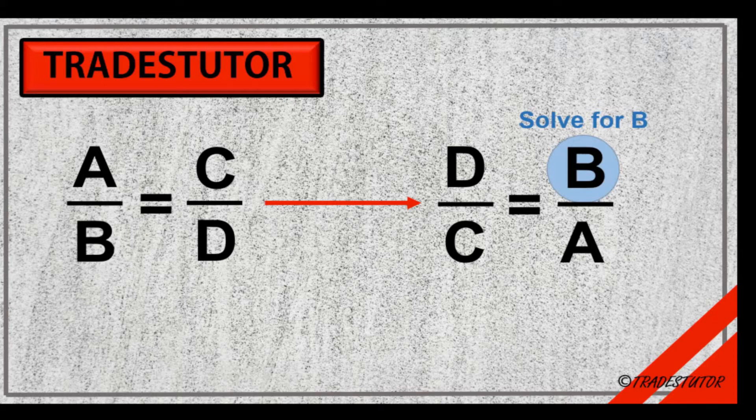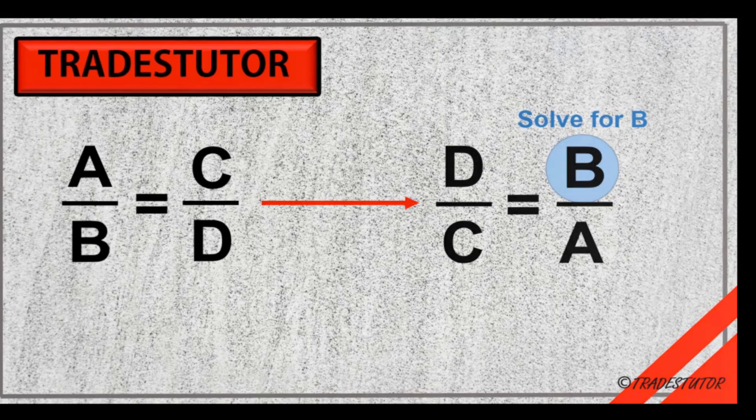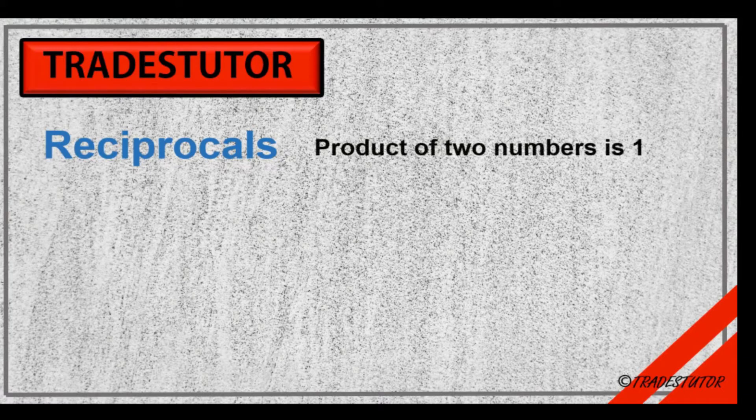Now the math that goes along with this is something called reciprocals. And that's the actual process whereby we move the variables around. So what a reciprocal is, is this: if you take any two numbers and multiply them together, the product of those two numbers is one.